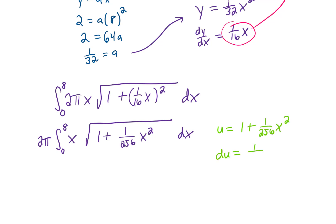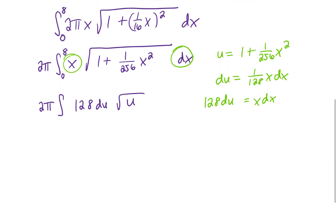Du is 1 over 128 x dx, or x dx is 128 du. We can replace x dx with 128 du, pull that 128 out of the integral, and rewrite the square root of u as u to the 1 half.